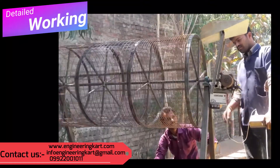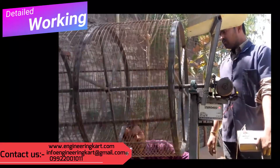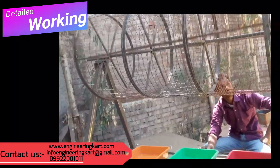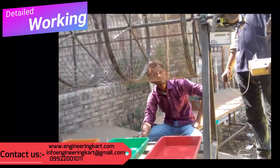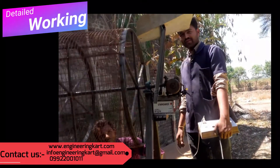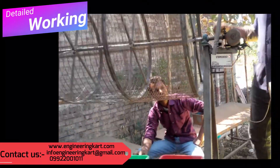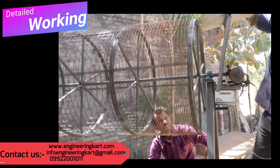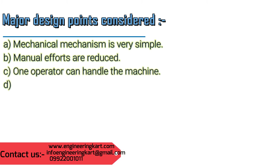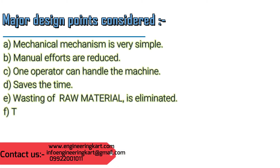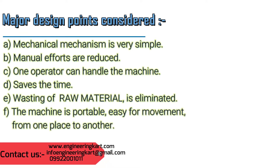All sorted material falls into the proper racks kept below the rotary drum. Raw material can be poured continuously or intermittently as per the requirement of the farmer. A robust fabricated frame is provided to run the machine smoothly. Key design points: the mechanical mechanism is very simple, manual efforts are reduced, one operator can handle the machine, it saves time, wastage of raw material is eliminated, and the machine is portable and easy to move from one place to another.